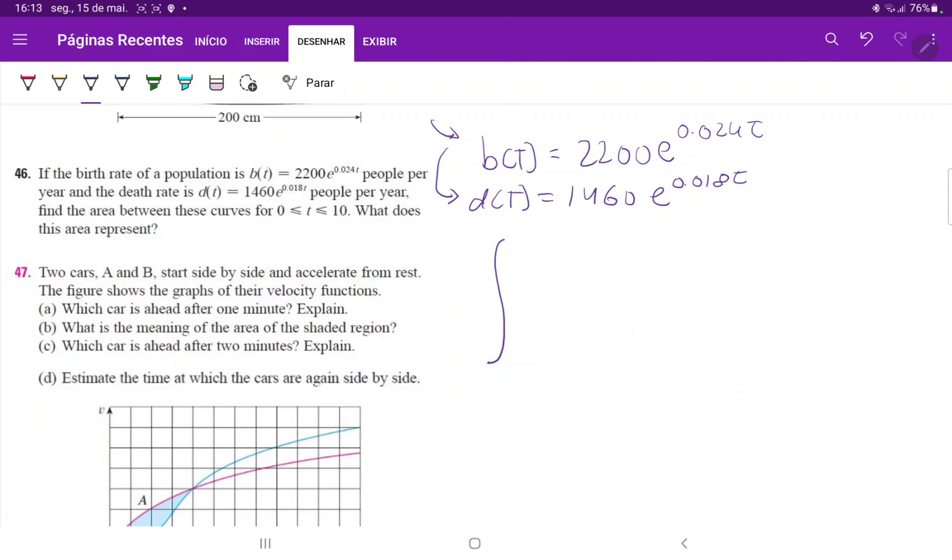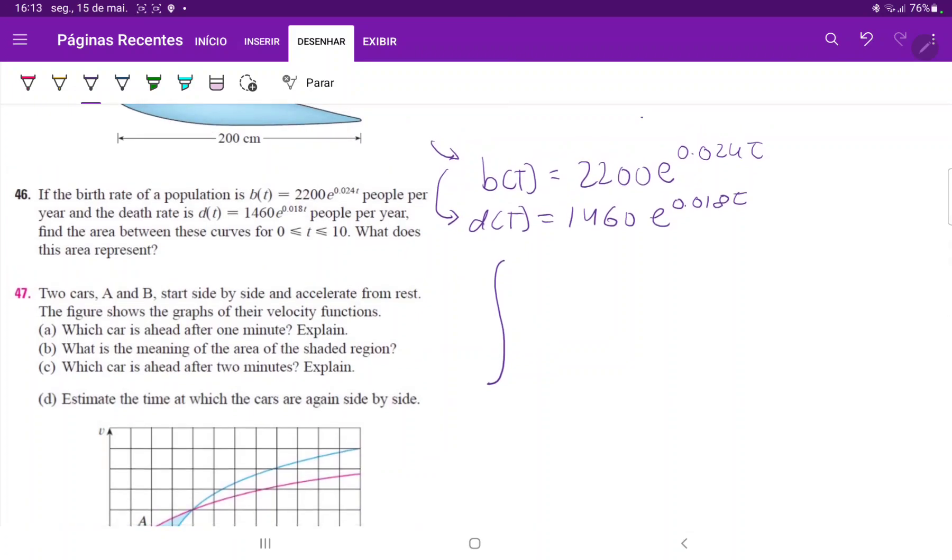we will put the upper function minus the lower function. So from 0 to 10 of 2200e to the 0.024t minus 1460e to the 0.018t, and all of this times dt.